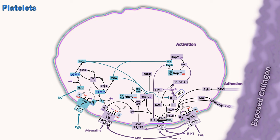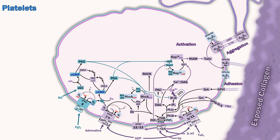RAP activation leads to so-called inside-out signaling, switching two different integrin receptors to high affinity states. The alpha 2 beta 1 receptor enhances platelet adhesion to collagen. The most important platelet receptor is the alpha 2 beta 3 integrin, formerly known as glycoprotein 2B3A. When active, it binds primarily to fibrinogen and von Willebrand factor, which can connect it to other activated platelets, a process known as aggregation. Defects of this receptor cause Glanzmann's thrombasthenia, which can cause severe bleeding.